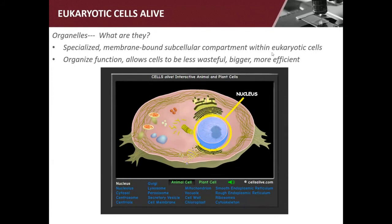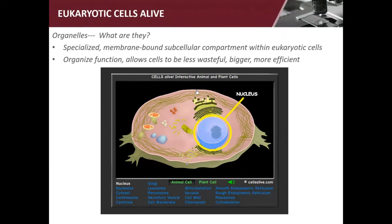One of the cool things about organelles is that it allows these cells to be bigger. Remember when we talked about the cell size difference between prokaryotes and eukaryotes? Eukaryotes are way bigger. This is what allows the cell to be bigger — we have all of these little compartments each doing their own thing, so it's more efficient. Resources are used more efficiently and therefore the cell can be bigger.